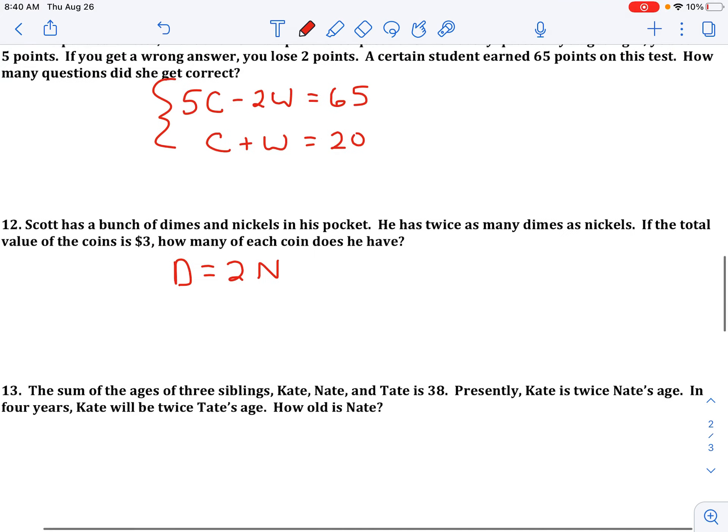So maybe give it a value. If you have twice as many dimes as nickels, let's say you have 10 dimes and 5 nickels, to make them even you'd have to double the number of nickels. And so that is one equation.